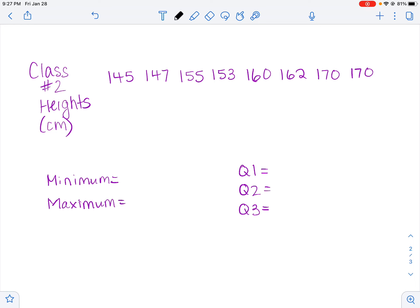So let's try this one. So minimum, our minimum number is 145. Our maximum is 170. The next number we should find is Q2, which is our middle number. So one, two, three, four from each side.